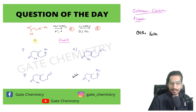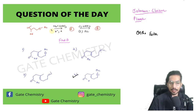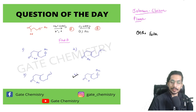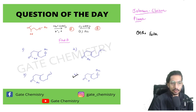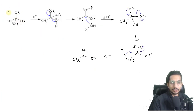Let me show you the mechanism — what happens when you're given an ortho ester, an acid, and heat. This is very important; it has been asked previously in CSIR NET and the GATE examination as well — not the same question, but the use of ortho esters. So let's quickly have a look at the mechanism.